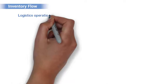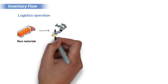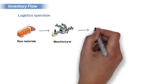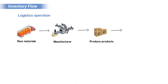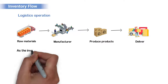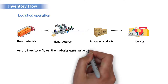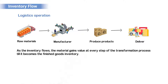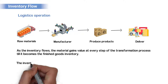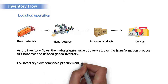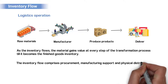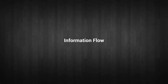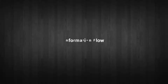The logistics operation starts from the shipment of raw materials and parts from the supplier to the manufacturer for processing to produce products needed by the customers, which are required to be delivered at the required time. As the inventory flows, the material gains value at every step of the transformation process, till it becomes the finished goods inventory. The inventory flow comprises procurement, manufacturing support and physical distribution.